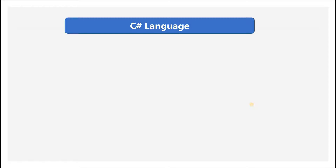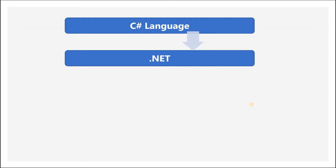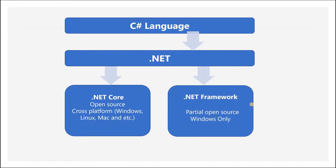The framework we are going to use in C# is .NET. There are two flavors of .NET: .NET Core and .NET Framework. When we talk about .NET in general, it is usually understood as .NET Framework. .NET Framework came about in 2002 and has kept evolving since then. It is for Windows only and is partially open sourced.